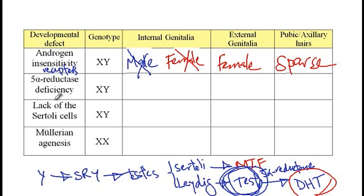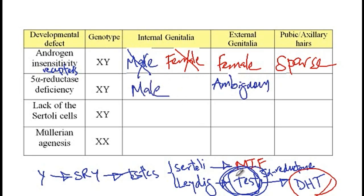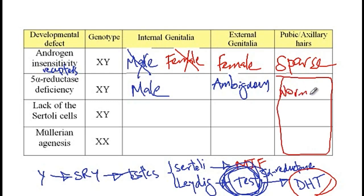In 5-alpha reductase deficiency, 5-alpha reductase is required for the conversion of testosterone into dihydrotestosterone, which is required for development of the external genitalia. Therefore, in these individuals, external genitalia would be ambiguous, and the internal genitalia would be normal male, because testosterone can still act on the Wolffian ducts. All other conditions listed have normal androgen receptors, and thus pubic and axillary hairs are normal.